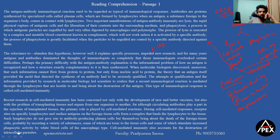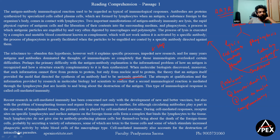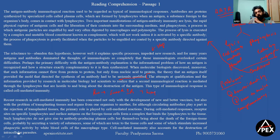When molecular biology discovered that such information cannot flow from protein to protein, but only from nucleic acid to protein, the theory that an antigen itself provided a mold that directed the synthesis of an antibody had to be seriously qualified. The attempts at qualification and information from molecular biology research led scientists to realize that a second immunological reaction is mediated through lymphocytes that are hostile to and bring about destruction of the antigen. This type of immunological response is called cell-mediated immunity.